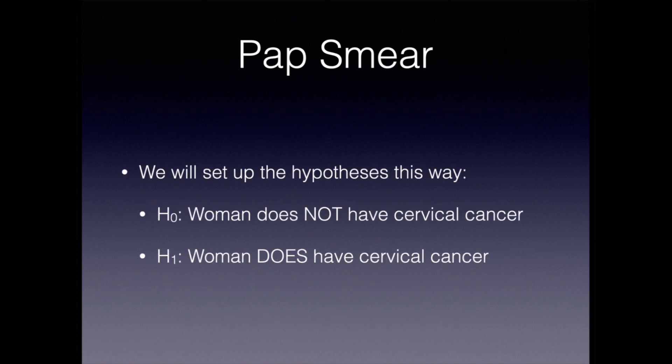We're going to set up the hypotheses in the following way: the null hypothesis is that the woman does not have cervical cancer, and the alternative is that she does. The physician assumes her patient does not have cervical cancer, but will let the data through the screening test guide her and indicate if that's not the case.